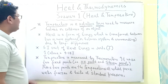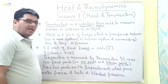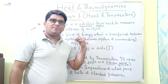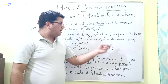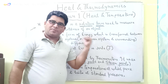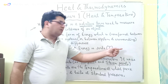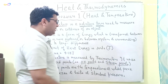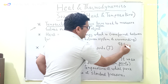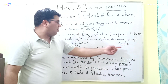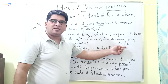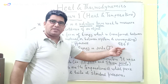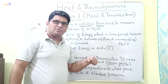So temperature is a relative term used to measure the hotness and coldness of an object. An object will feel hot to a human if the temperature of that object is more than the human body temperature of 98.6 degrees Fahrenheit, and if its temperature is less than 98.6 degrees Fahrenheit, then that object will feel cold to us.